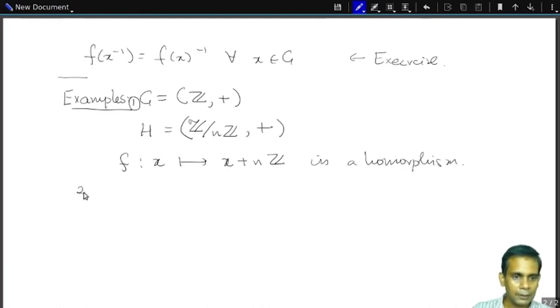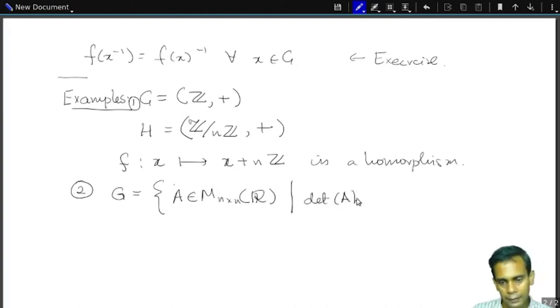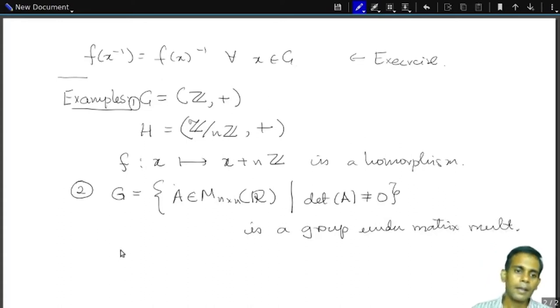And here's another example from linear algebra. So you take G to be the group of all matrices A, say N by N matrices. Let's say with real entries such that determinant of A is non-zero. Then we know that if determinant of A is non-zero, then A is an invertible matrix. So this forms a group under multiplication, under matrix multiplication.